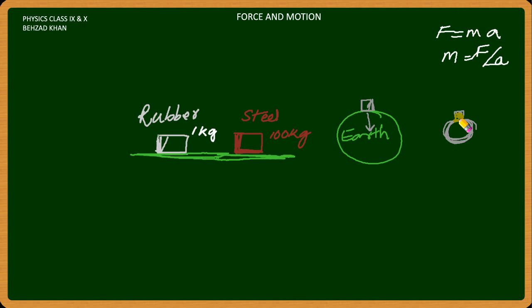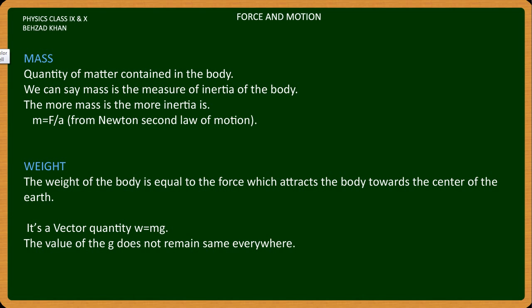The force that we are holding our bodies toward the center we call weight. This is a vector quantity. If we have acceleration due to gravity on Earth, then it is 9.8 meter per second squared, and on the Moon it is 1.6 meter per second squared.